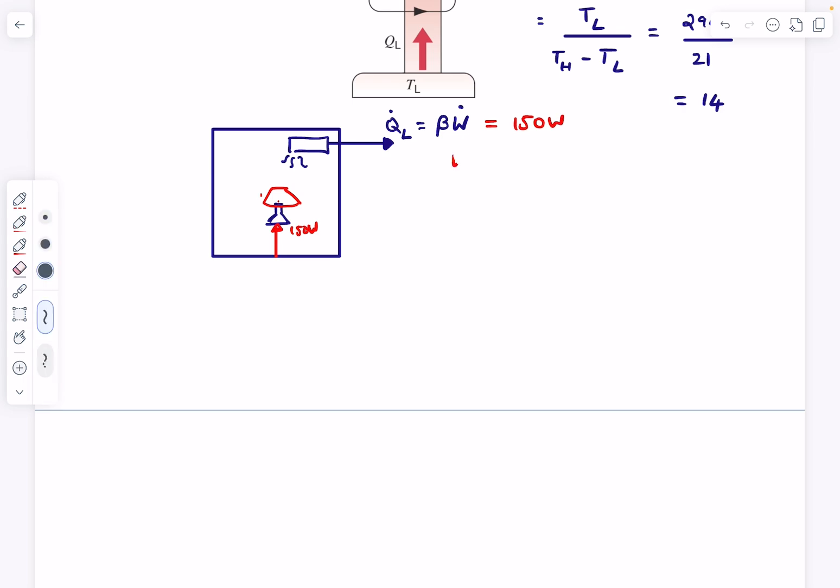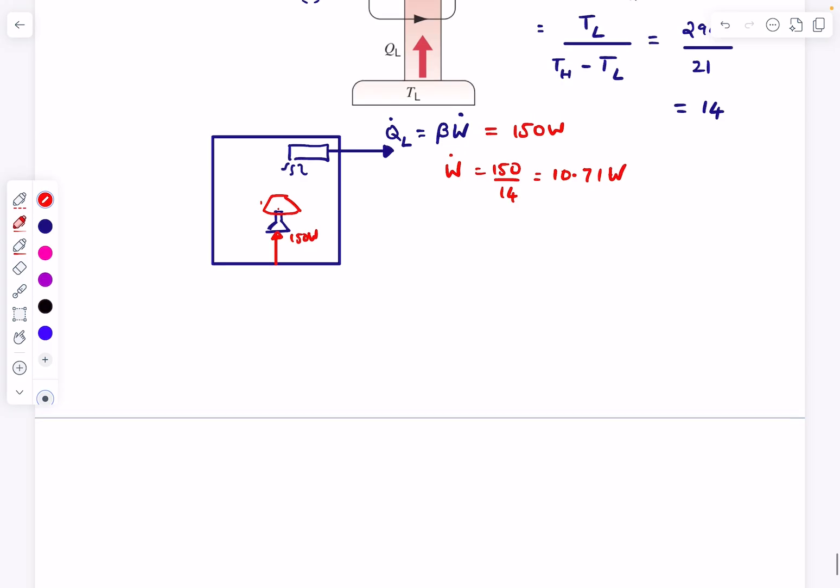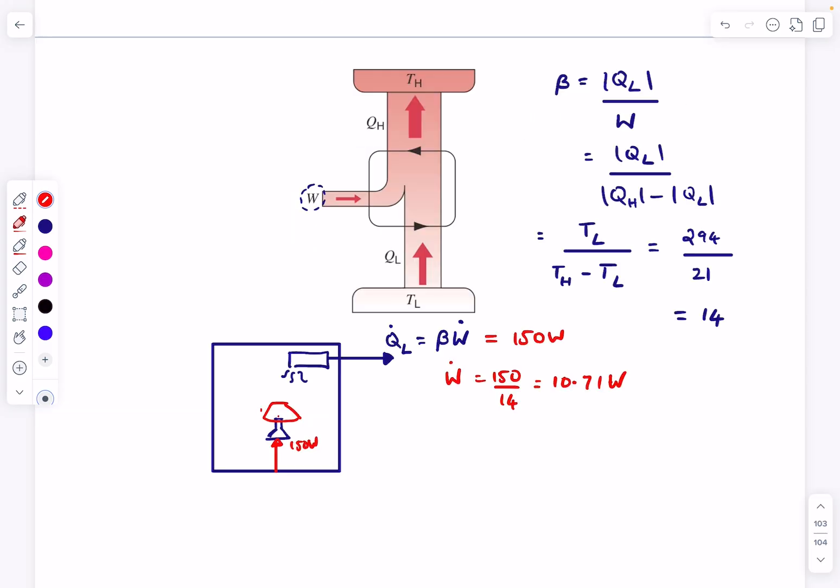The power supplied to the air conditioner would be just 150 divided by beta, which is 14. This would be approximately 10.71 watts. That's the answer to this problem. That was it for this video guys. If you have any doubts, you can ask below. Thanks for watching.